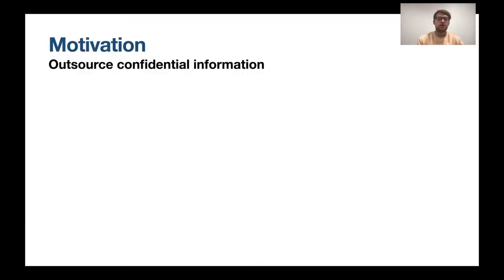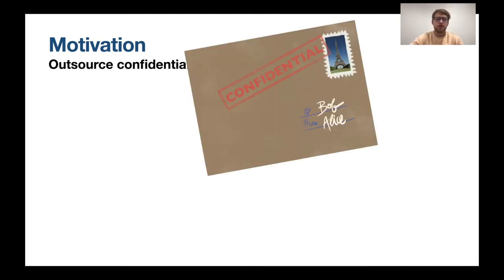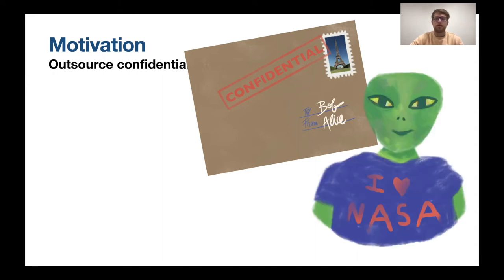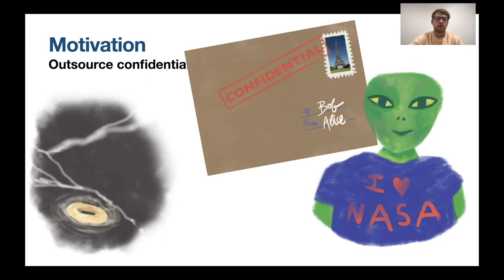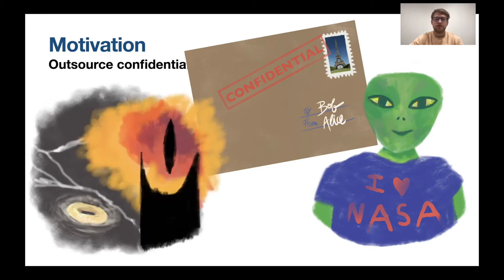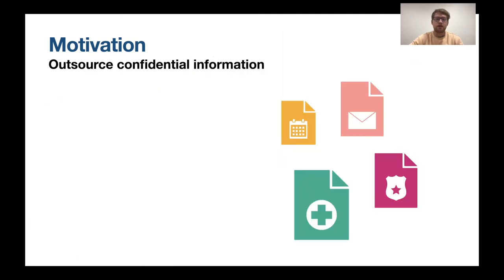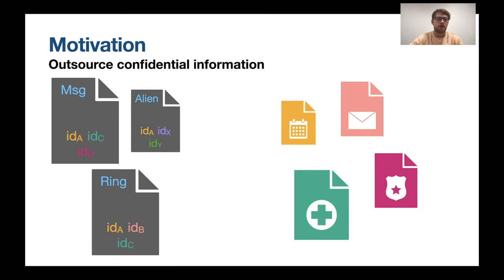I want to quickly motivate how and why SSE is useful. Say you have information that you don't want anyone to have access to — say confidential messages, or information about aliens that the public should not know about, or information about the one ring and SOREN should not access this. More concretely, we have a bunch of documents and each contains information about certain keywords — here in blue for example: messages, aliens, or the ring — and each keyword appears in certain documents identified by document identifiers.